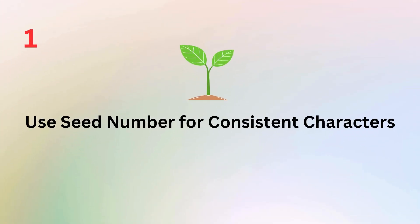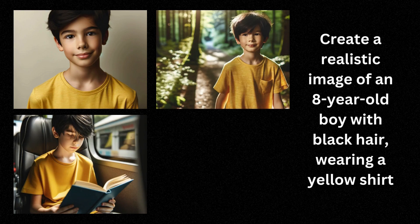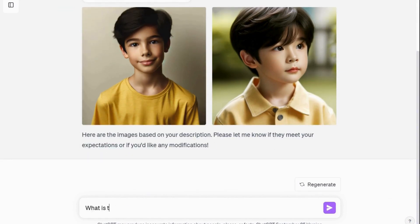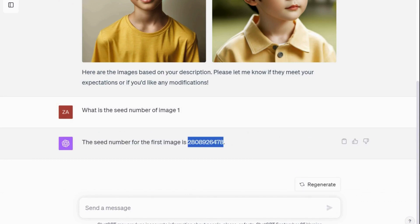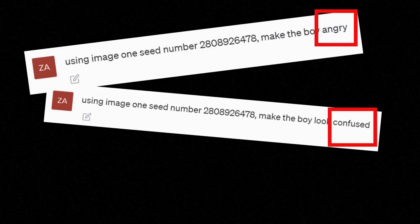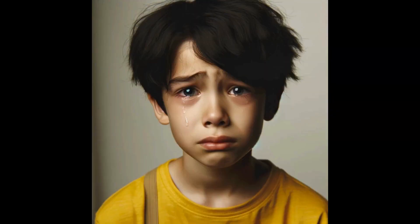Our first tip revolves around the use of seed numbers to maintain consistency in your character generation. This simple technique allows you to create characters that remain consistent across different settings. Simply ask ChatGPT about the seed number of an image that you like. When you provide a seed number, DALL-E 3 uses it as a reference point for the following character generation. You can also use seed numbers to portray different facial expressions on the same character, adding depth and flexibility to your creations.